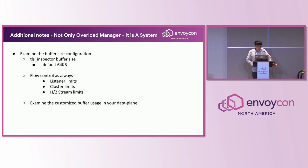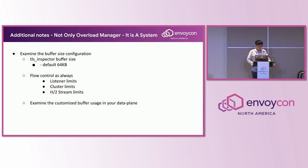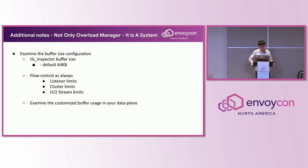Last but not least, always examine the buffer size configuration. For example, some filters will pre-allocate unnecessary buffers, and this can be tuned based on your system and usage. One example is the TLS inspector listener filter — a buffer could have a default 64 kilobytes buffer size, which the actual traffic may not need. Envoy also has great flow control mechanisms. Consider choosing the proper buffer limit based on your traffic from different levels like listener, cluster, and even the H2 stream settings. Always examine your customized filter buffer usage in your data plane.